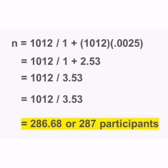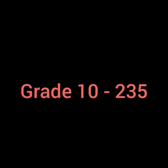The next question is: how do we ensure that there is equal representation of participants from each level, considering that the population of each level differs from one another? Grade 7 has 229, Grade 8 has 276, Grade 9 has 272, and Grade 10 has 235 students respectively.